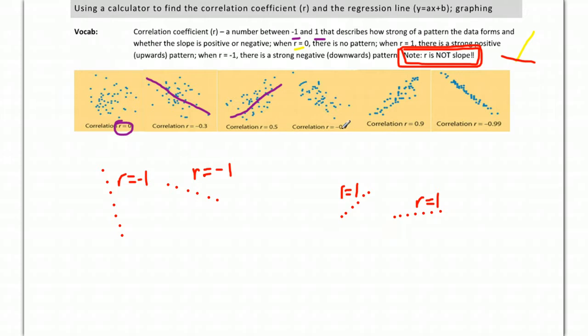By the time you start getting up into like the 0.7—this one's going down, so it's a negative 0.7—the pattern's getting better but again still a lot of fuzziness around there. By 0.9 it's looking pretty clear that there's a very strong pattern going on. So when you get into the 0.9, you're looking at a very good pattern.